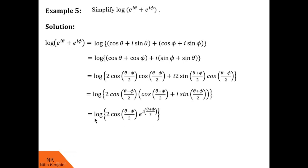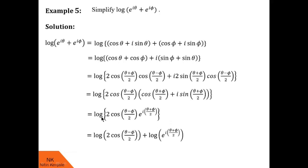Now we have the expression as log of 2 cos((theta-phi)/2) into e raised to i(theta+phi)/2. This is like log of a into b, and according to the log property log(ab) = log a + log b. So this can be written as log of 2 cos((theta-phi)/2) plus log of e raised to i(theta+phi)/2. Since this log is with base e, log of e raised to i(theta+phi)/2 can be written as just i(theta+phi)/2. This is the simplified form of the given expression.